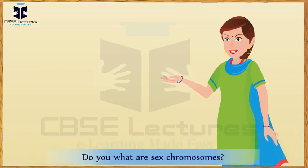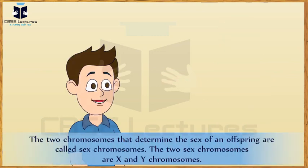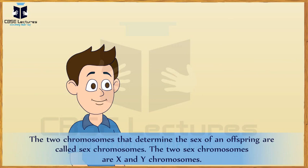Do you know what sex chromosomes are? The two chromosomes that determine the sex of an offspring are called sex chromosomes. The two sex chromosomes are the X and Y chromosomes.